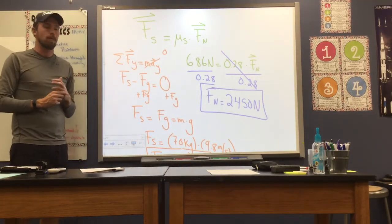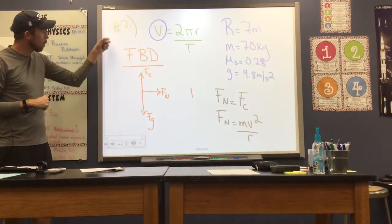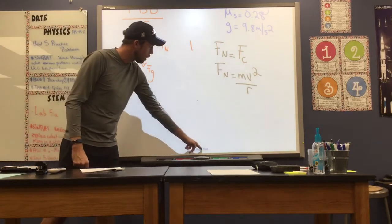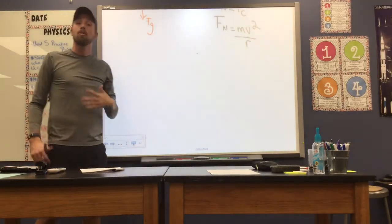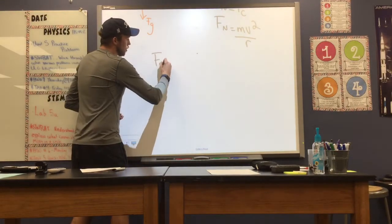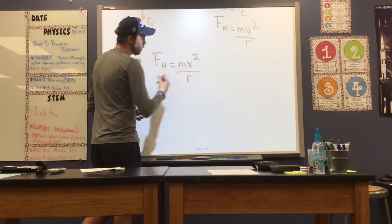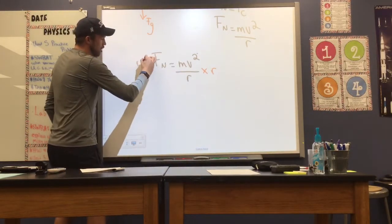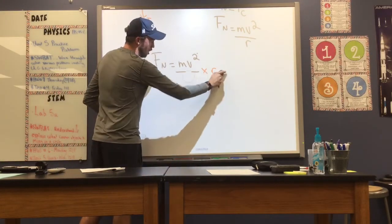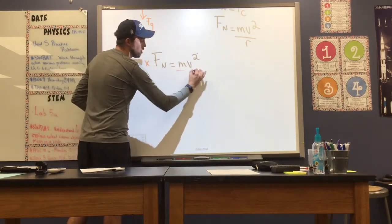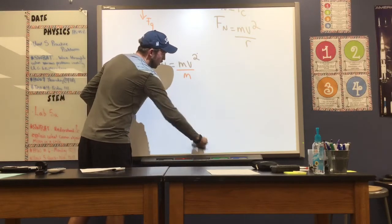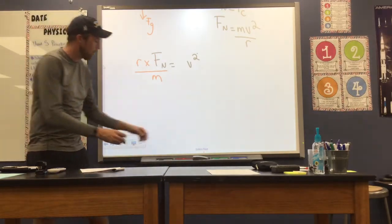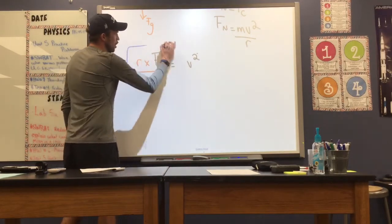We've used previous knowledge to find the normal force, and now we can use what we know about the relationship between forces to continue solving the problem. Since our normal force is our centripetal force — the force directed toward the center — we're going to set up Fn equals mv² over r and use it to solve for velocity. To get velocity by itself, we multiply both sides by radius, which cancels r on the right, then divide both sides by mass. We do need to take a square root, so our velocity equals the square root of the radius times the normal force divided by the mass.